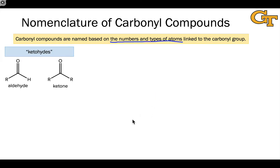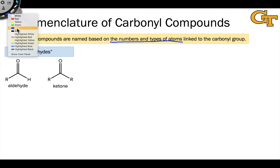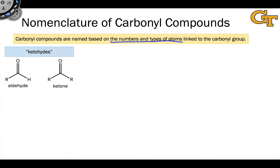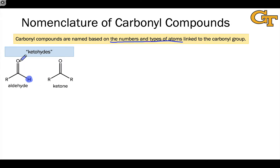The simplest class of carbonyl compounds, in which either carbon or hydrogen is linked to the carbonyl carbon, are called aldehydes or ketones. In an aldehyde, we have one or two hydrogens linked to the carbonyl carbon, with a carbon group on the other side if we only have one.